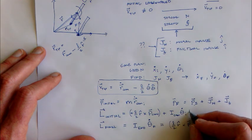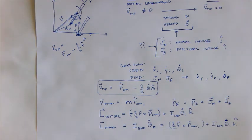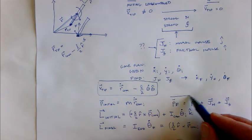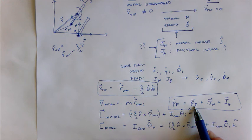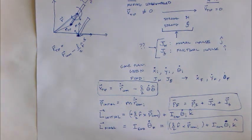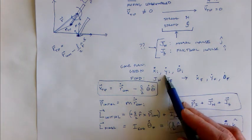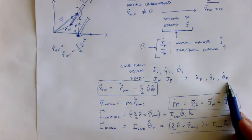Since I've chosen the tip as my origin, neither the normal nor the frictional impulse actually applies a torque impulse. Therefore the final angular momentum equals the initial angular momentum — that is, L/2 times r-hat cross p-center-mass-initial plus I-center-mass times theta-dot-initial, all in the k-hat direction. So I can write the final linear momentum in terms of the impulses and initial momentum, and the final angular momentum in terms of the initial state, independent of the impulses. From there, we find these impulses and determine the final state.